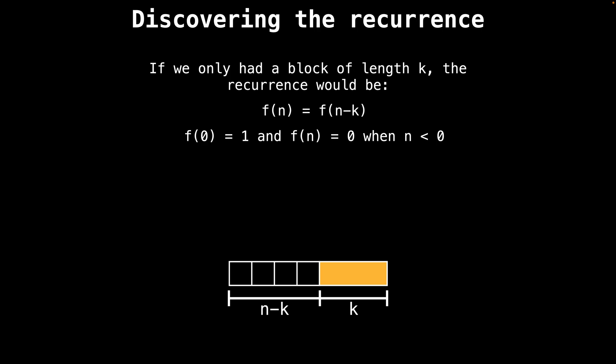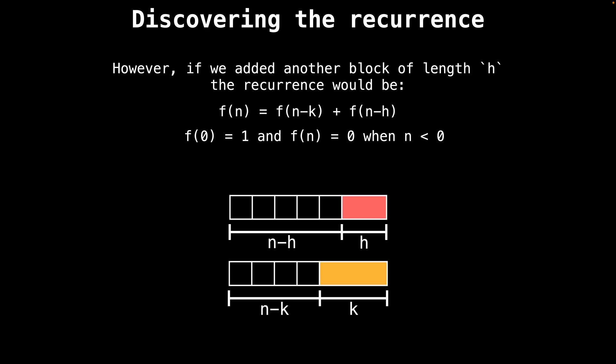If you assume that we only had a single block of length k to tile boards with, then the recurrence would be pretty simple: it would be f(n) = f(n-k). However, if we added another block of length h to our set of available blocks, then the recurrence would become f(n) = f(n-k) + f(n-h). Because blocks of length h are a different color, they generate their own unique set of tilings that need to be accounted for in the recurrence.